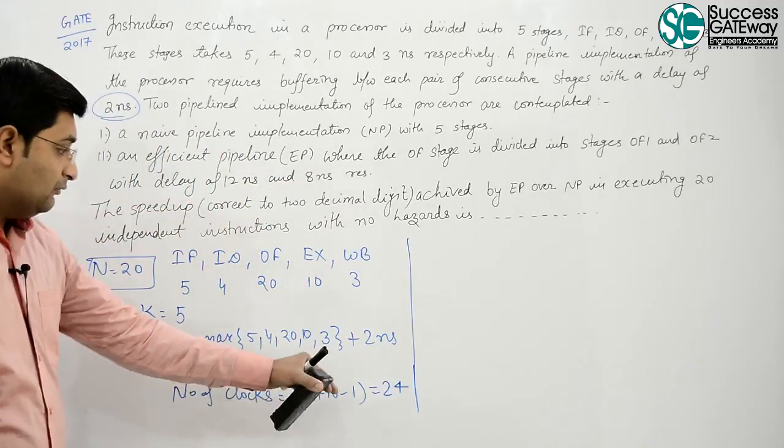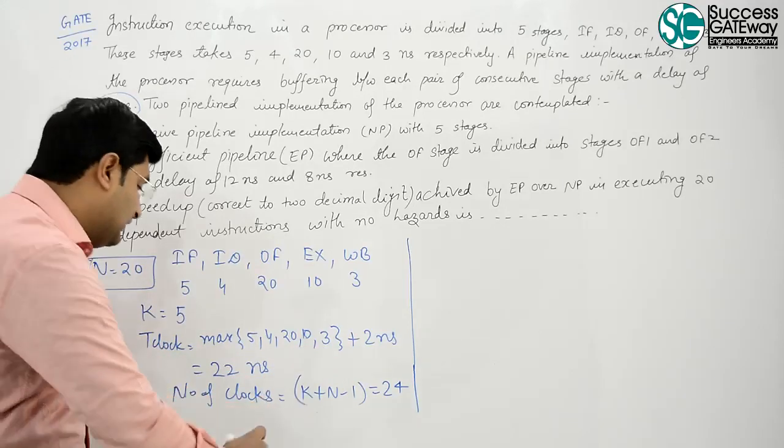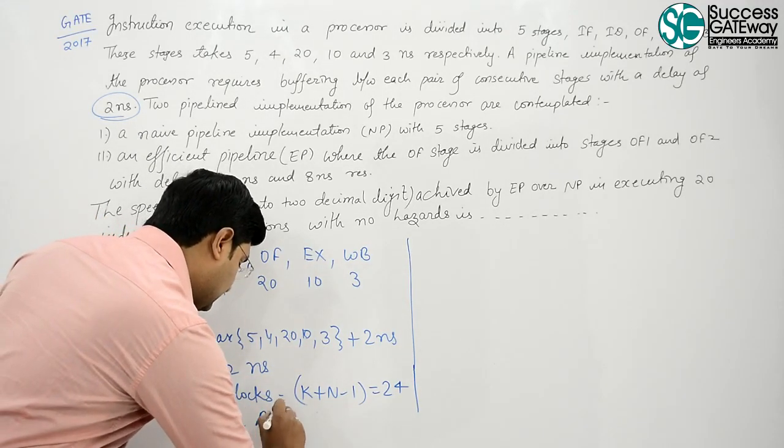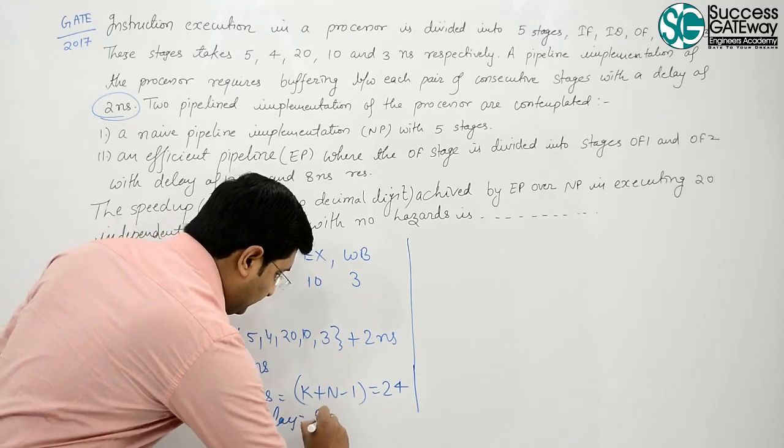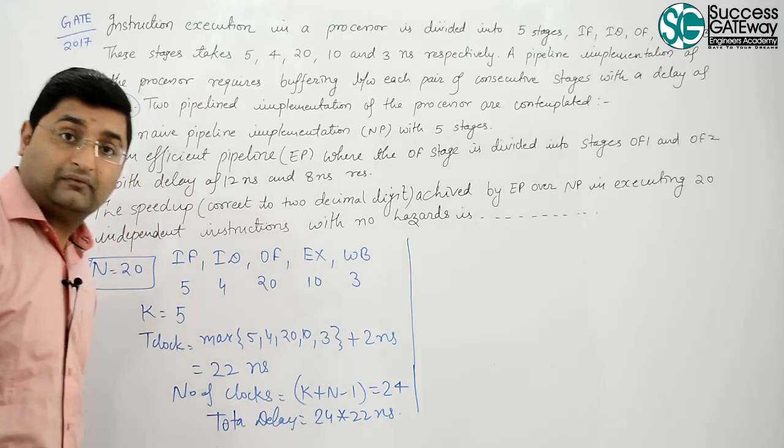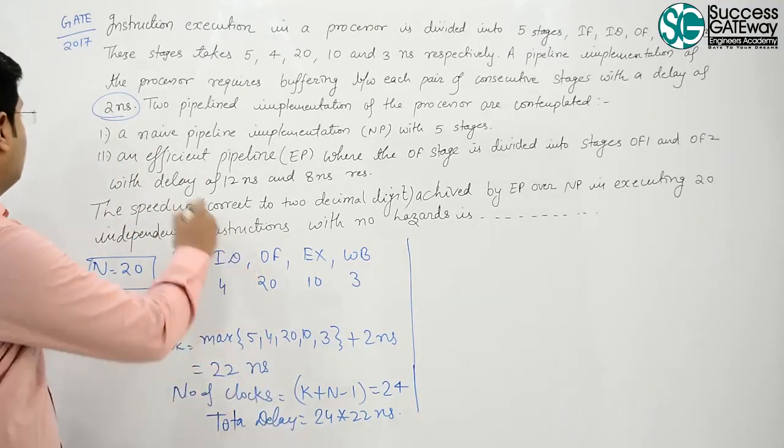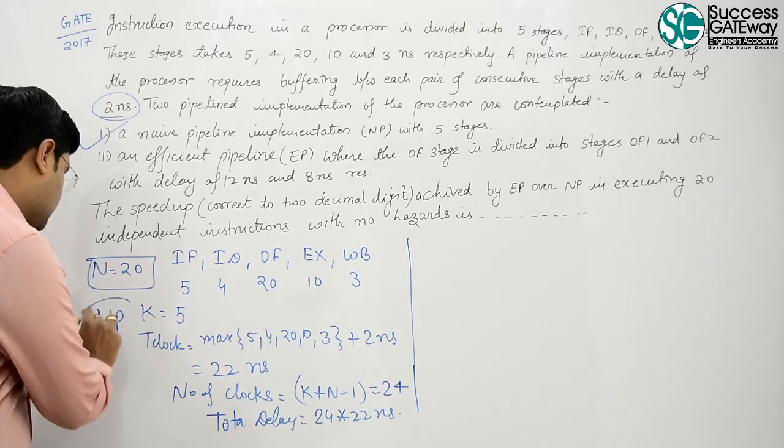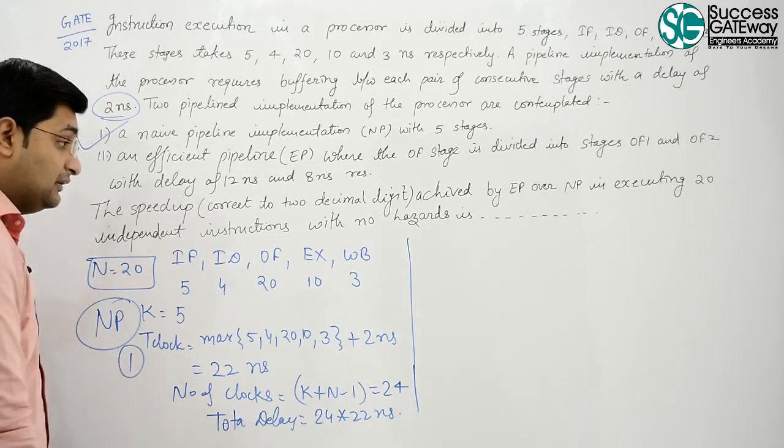Now, what is the total delay? Total delay is 24 into 22 nanoseconds in NP first.